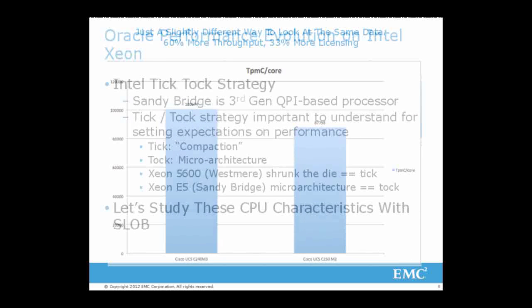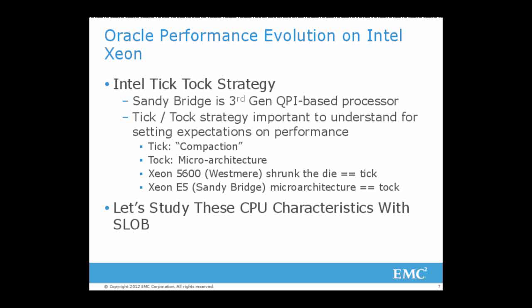We have to start talking about evolution of performance on Intel Xeon. You have to understand a little of Intel terminology — has anybody heard of the Tick-Tock strategy? Sandy Bridge, or E5-2600 and 4600, is the third generation of QuickPath Interconnect CPUs. The Tick in Tick-Tock is squeezing the die, giving more real estate for really cool things in silicon. The Tock is changing the microarchitecture, which allows Intel to do even more with the die.